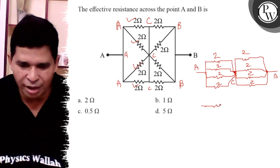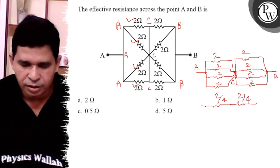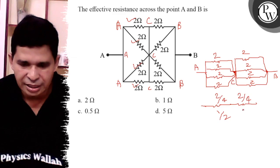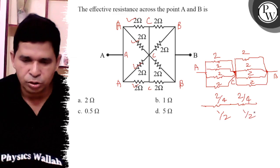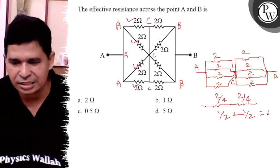So it is 2 by 4, and it is also 2 by 4. So it is 1 by 2, it is also 1 by 2. And 1 by 2, 1 by 2 in series, so net resistance is 1 ohm.